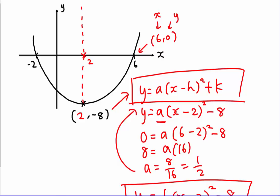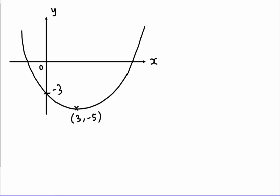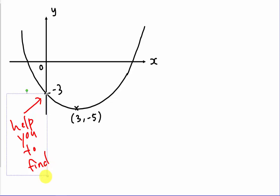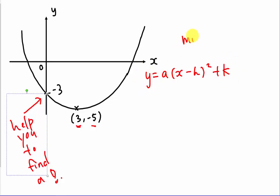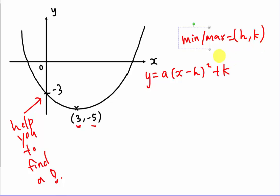For the last example, the diagram gives you the minimum coordinates directly and the y-intercept. The x-intercept or y-intercept is always used to help find the value of a. Since the minimum or maximum point is given, use the formula y = a(x − h)² + k.